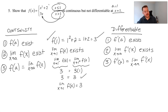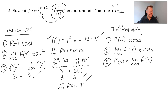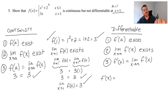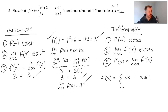Since f of one equals three and the limit as x approaches one equals three, the third criteria is met, so our function is continuous. Now we need to show it's not differentiable. We take the derivative of the piecewise function: the derivative of x squared plus two x is two x, for x less than or equal to one; and the derivative of three x is just three, for x greater than one.